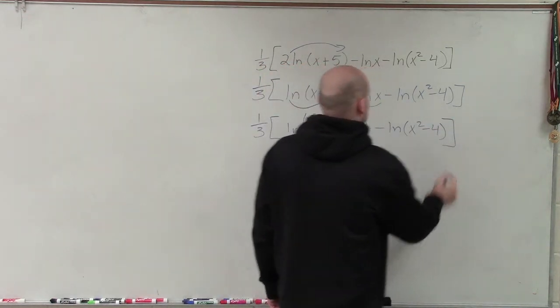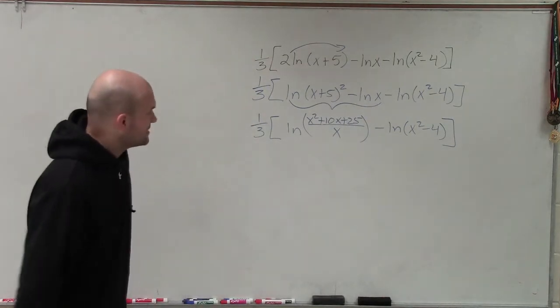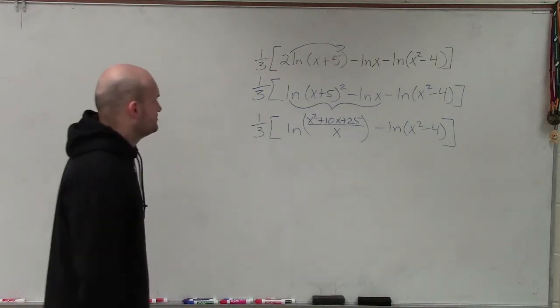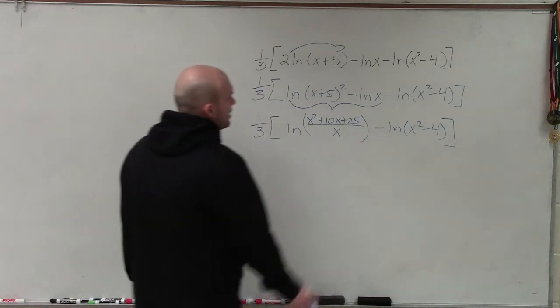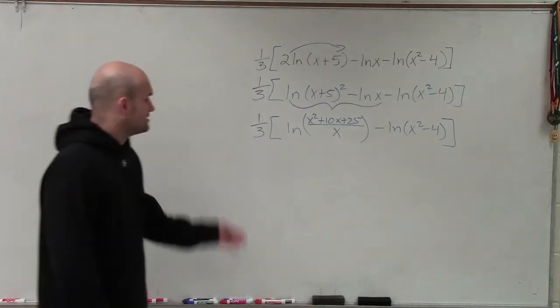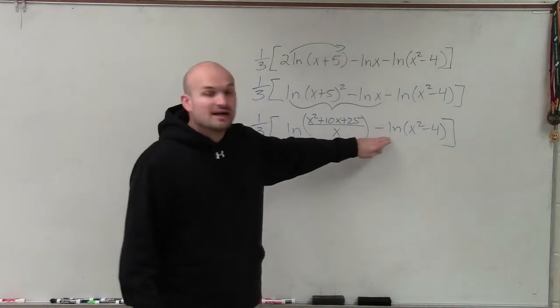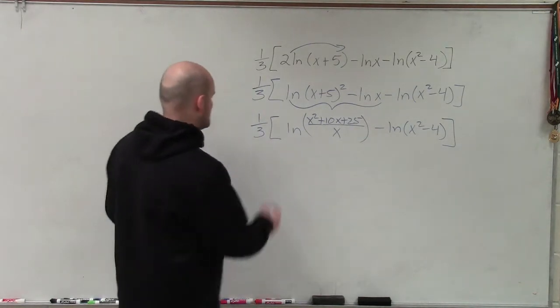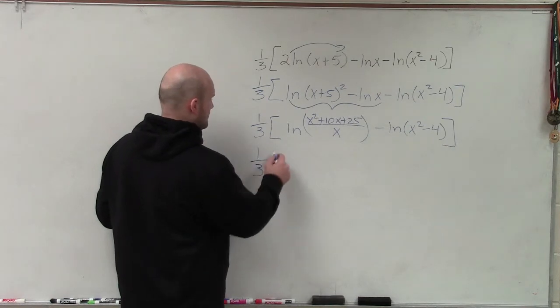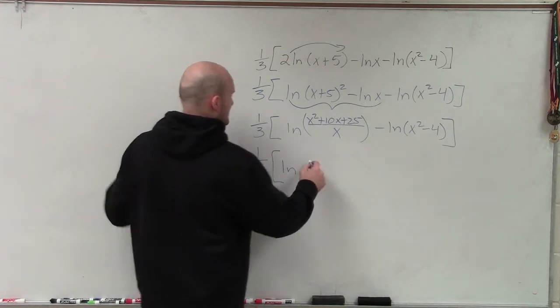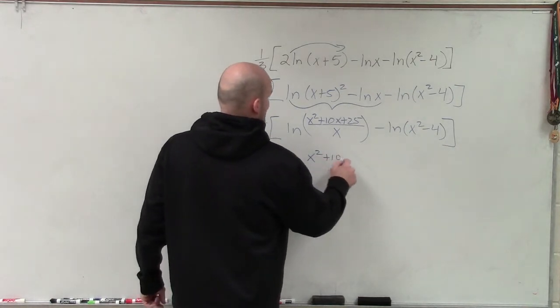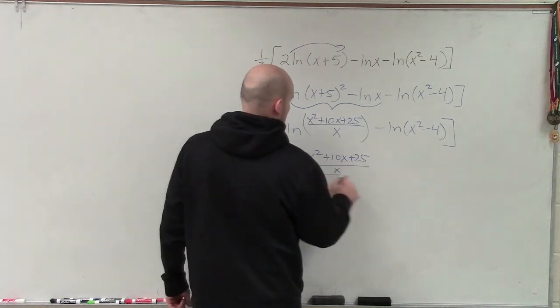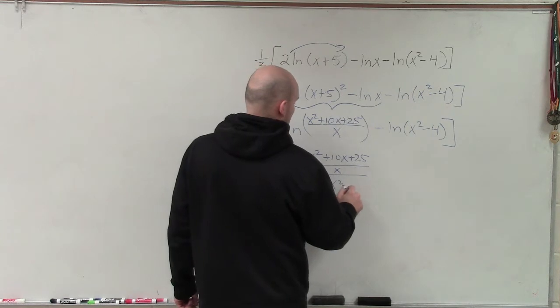Now again, I can continue working on this. So again, now you can look at this and say, alright, well now I can use my quotient property again. Now I'm going to be dividing these. So therefore, it looks something like this: 1 third ln of x squared plus 10x plus 25 divided by x, divided by x squared minus 4.